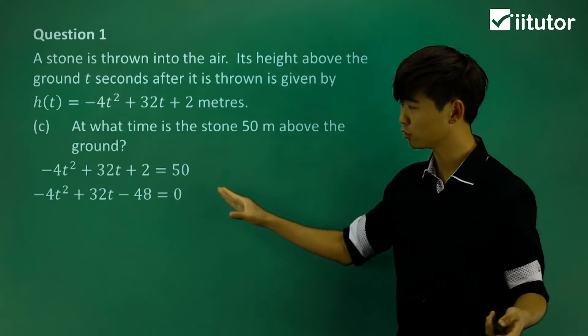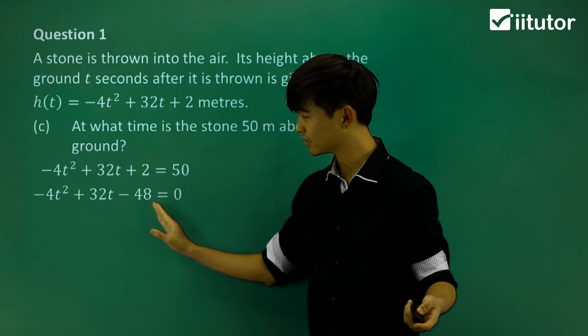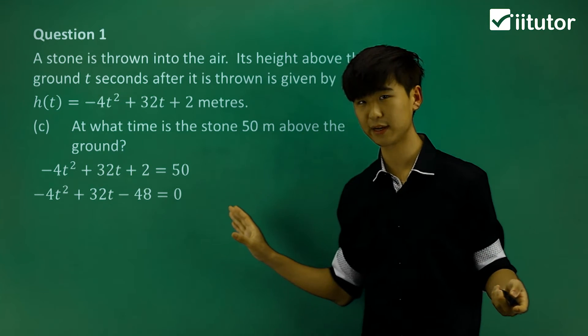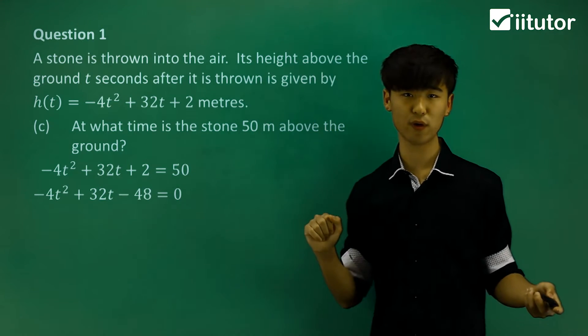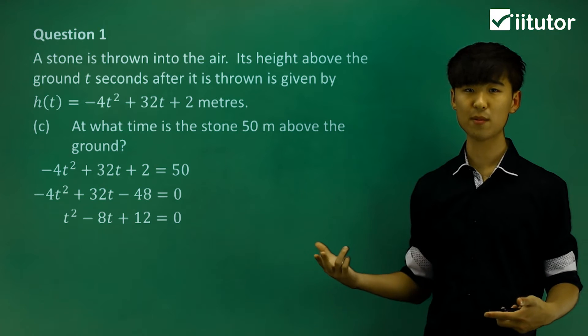We get -4t² + 32t - 48 = 0. Dividing everything by -4 makes it simpler: t² - 8t + 12 = 0.